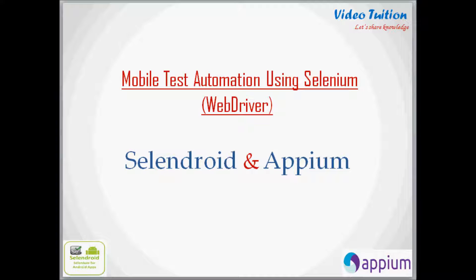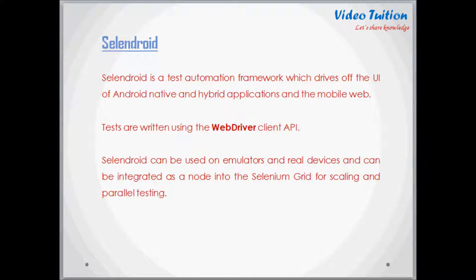In this session, I am going to explain SelenDroid and Appium automation capabilities at a high level and also look at a comparison of the two. SelenDroid is a test automation framework which drives the user interface of Android native and hybrid applications and mobile web. Tests are written using the WebDriver client interface. SelenDroid can be used on emulators and real devices and can be integrated as a node into the Selenium grid for scaling and parallel testing.